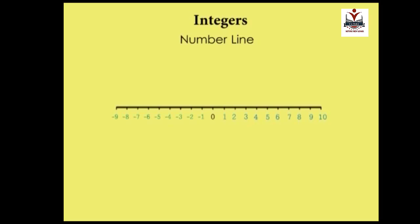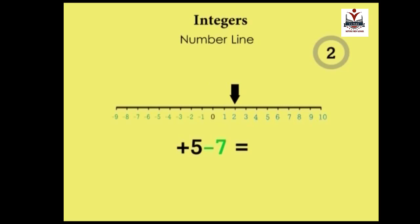To use the number line, we must always start from zero. For example, consider 5 minus 7. In integers, the operation sign in front of a number defines that number. When no sign is written, it is a plus. So in this operation we have plus 5 and minus 7. Starting from zero, we move five steps towards the right: 1, 2, 3, 4, 5.